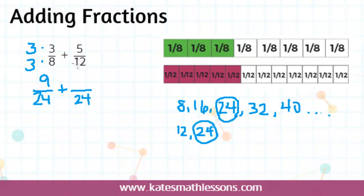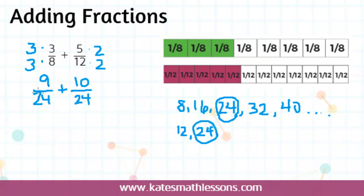For the next fraction, I look at the 12: what do I need to multiply 12 by to get 24? I need to multiply it by 2. So I multiply the top and bottom by 2. 5 times 2 is 10, and 12 times 2 is 24. So 5/12 is the same thing as 10/24. Once you have a common denominator, all the pieces are the same size — little 24th pieces. You have 9 of them plus 10 more, which is a total of 19 of them, giving you 19/24.